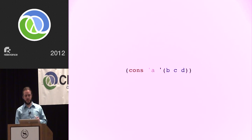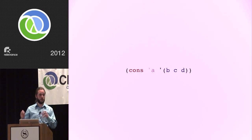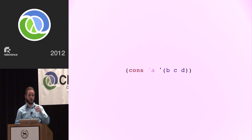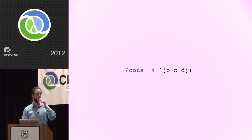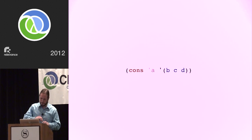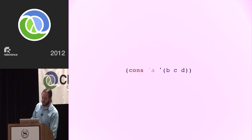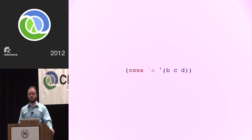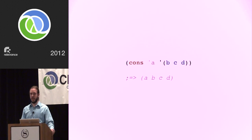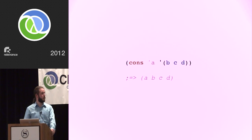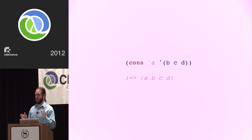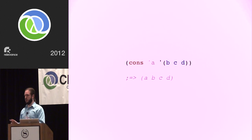Simple examples to look at: cons. If I cons A onto B, C, D, I get A, B, C, D—nothing surprising there. How do we transform this from a regular function to a relational function, a goal? Daniel and Will told us yesterday there are two steps. First step: add an O to the end. That's the most important step. And as Craig Andera said, if you use a logic program, you should alias the logic portion as L—so you can say el-conso, el-texto, el-embro.